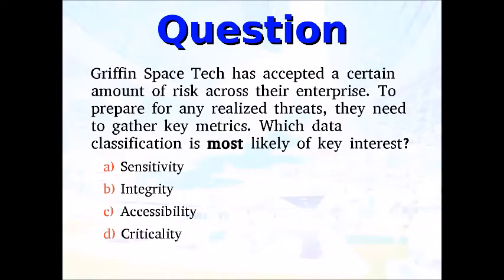Kirk asks: would it be accessibility? Spock replies: I could see where that could work — you'd need to be able to access certain systems, and accessibility is another word that could be used for availability. What about criticality? Affirmative, Captain — it could also be looked at as criticality, another term used to describe an asset we need to get a hold of. We typically think of high-risk dangers as critical. So you're saying it could be C or D. Yes, Captain.